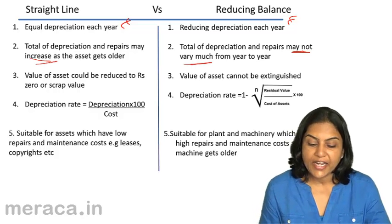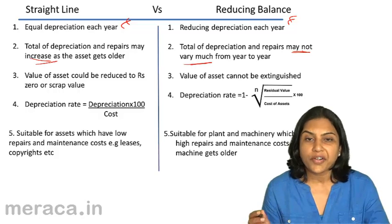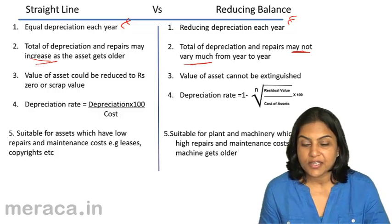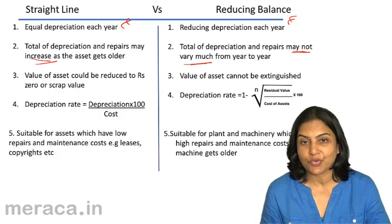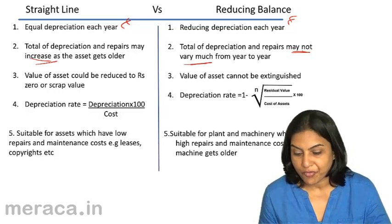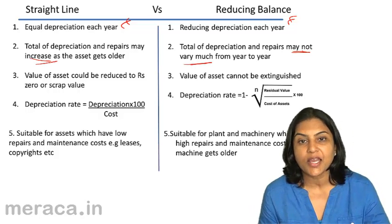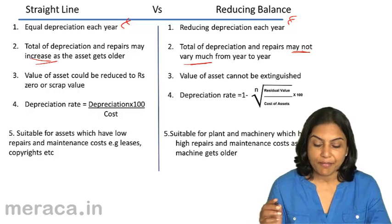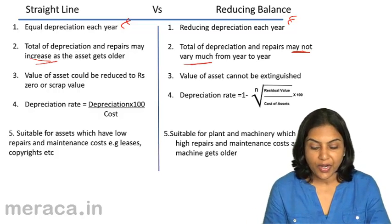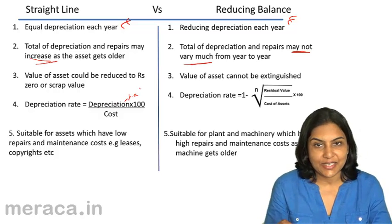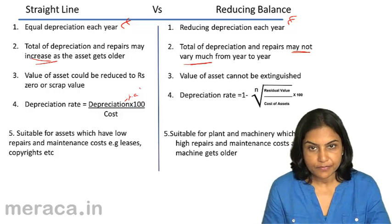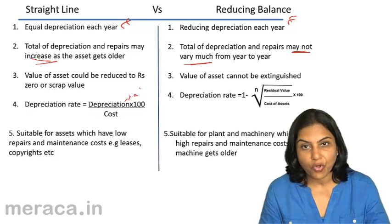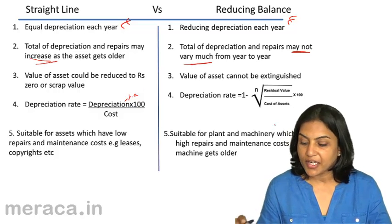Under the straight line method, the value of an asset can be reduced to zero or to its scrap value. Under the reducing balance method, the value of an asset cannot be extinguished; even if it has no scrap value, there will always be some balance remaining. The rate under the straight line method is depreciation per annum divided by cost, multiplied by 100. Under the reducing balance method, the rate is 1 minus the nth root of residual value divided by cost of asset, multiplied by 100.